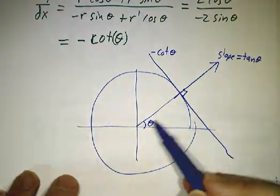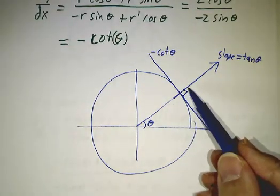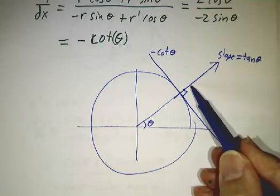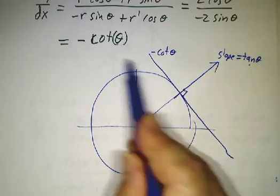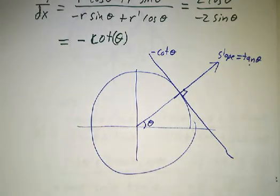You may remember that when you want to take the perpendicular to a line, you take minus the reciprocal of the slope. Minus the reciprocal of tangent of theta is negative cotangent of theta.